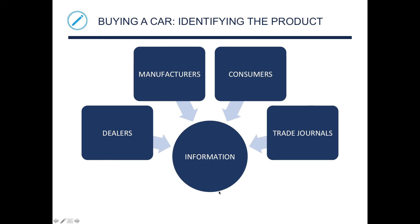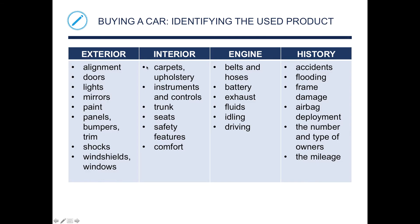Information is obtained from dealers, manufacturers, consumers, and trade journals. When identifying a used product, look at the exterior — alignment, doors, lights, mirrors, paint, panels, bumpers, trims, shocks, windshields, and windows; any dissatisfaction with these is grounds to negotiate the price down. Check the interior — carpets, upholstery, instruments and controls, trunks, seats, safety features, and comfort. Check the engine — belts and hoses, battery, exhaust, fluids, and idling or driving behavior. And review the history — accidents, flooding, frame damage, airbag deployment, number and type of owners, and mileage. Getting a Carfax is a good way to negotiate the price down; a car handed from owner to owner in a very short time may signal underlying issues.